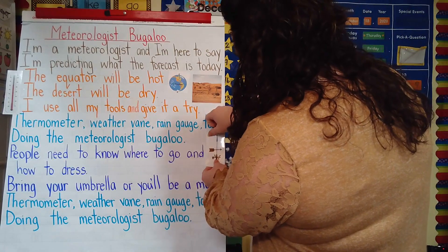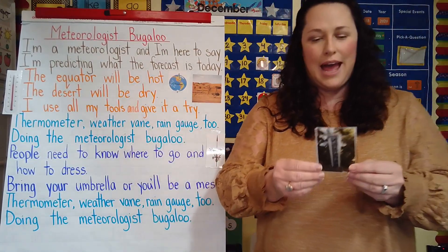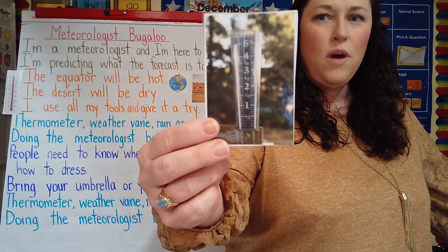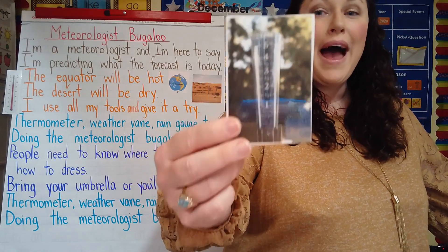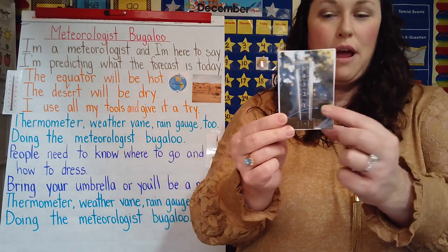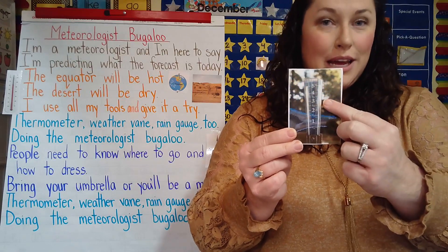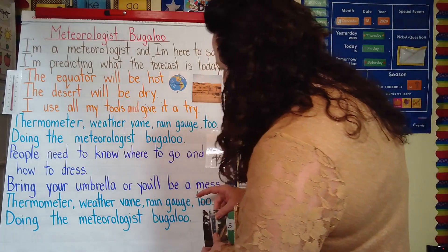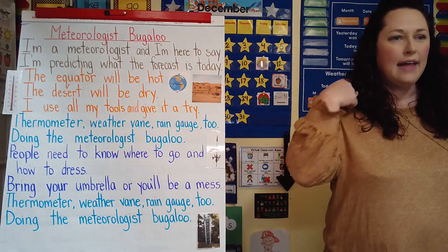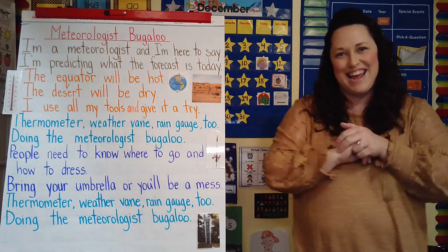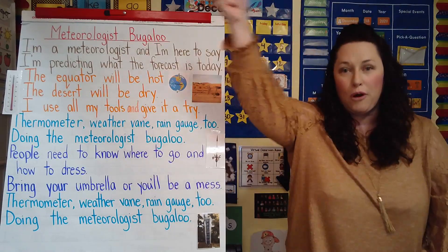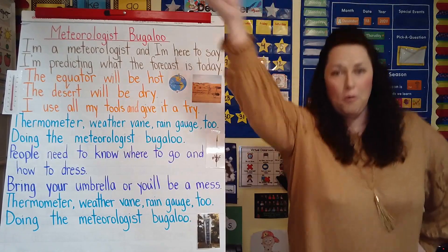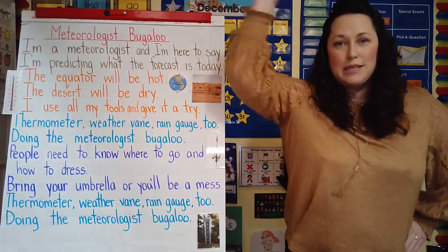I'm going to put my weather vane over here. And then, friends, a rain gauge — it looks like this. It's a clear plastic container that you can put outside, and when it rains it collects the rain and it'll tell you how much it rained. Did it rain one inch last night? Two inches? Three inches? So if it's going to rain, we put out a rain gauge. I'm going to put my rain gauge down here for us to see. And then doing the meteorologist boogaloo — it's a fun dance. So you get to pretend like you're a cowboy with a rope, swinging your rope over your head, with your other hand on your hip. Doing the meteorologist boogaloo.